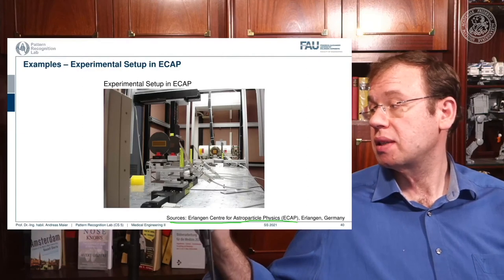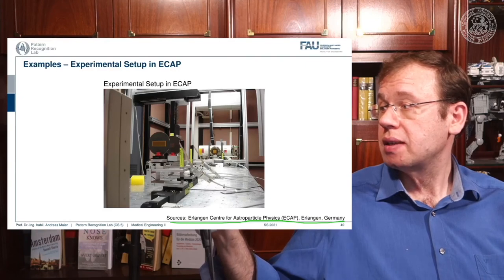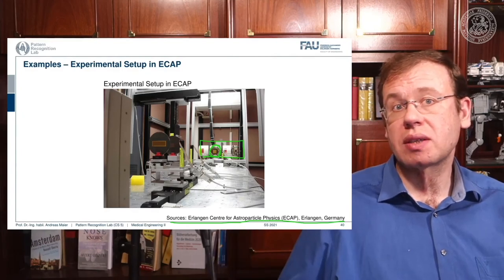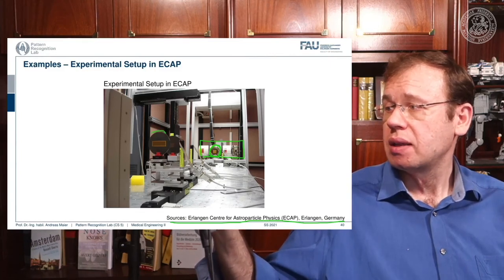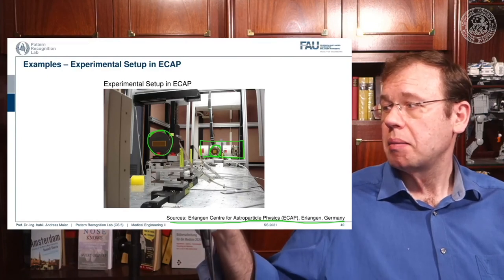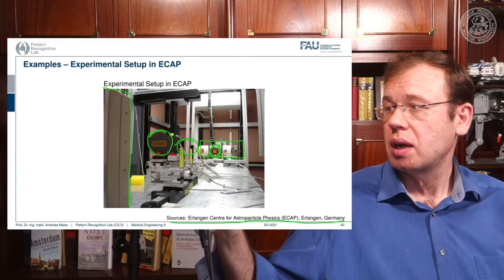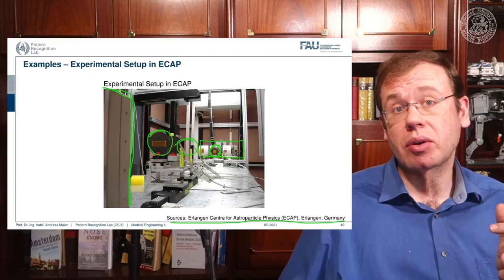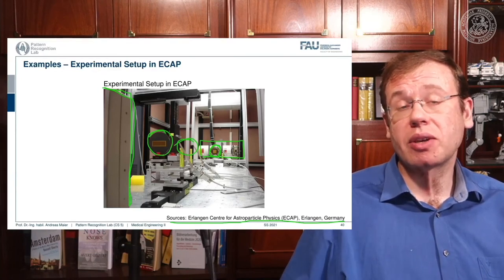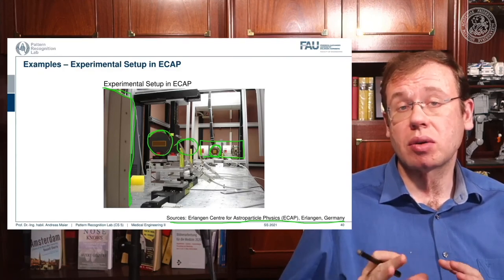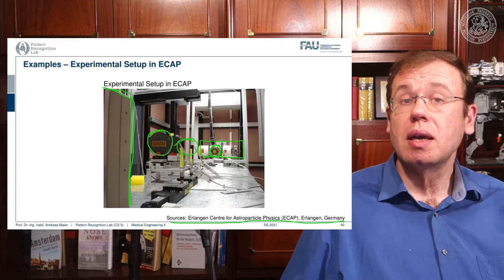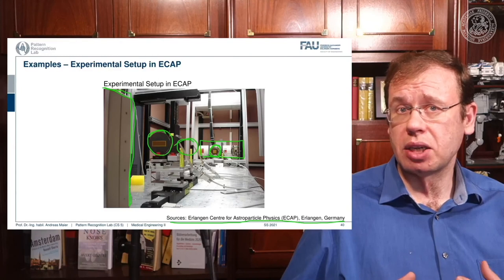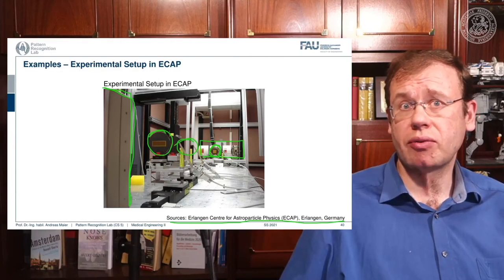The actual measurement setup is located at the Erlangen Centre for Astroparticle Physics in Erlangen, Germany. Key components: a medical-grade X-ray tube, the G0 grating for coherent source generation, the phase grating G1, the object placement area, and the detector with phase stepping. The long distances must be aligned to micrometer precision, requiring careful alignment and significant time investment. The setup may also be temperature-dependent, since micrometer-level thermal expansion can shift the gratings, requiring frequent recalibration — best done with automated means.